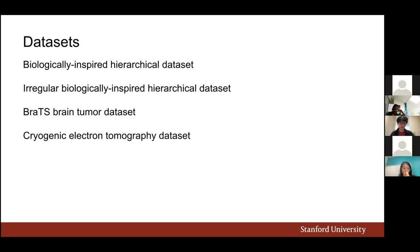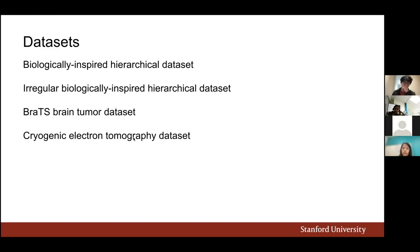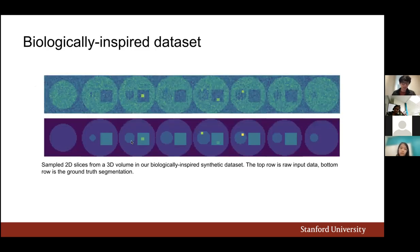We evaluate on different datasets: a toy dataset with a simple hierarchical structure inspired by a cell — a large circle containing medium-sized shapes (circle and square), each containing smaller shapes — and then a more irregular version with added noise. We also evaluate on the BraTS brain tumor dataset and provide qualitative examples on a cryogenic electron tomography dataset. The toy dataset volumes are 50×50×50 pixels.